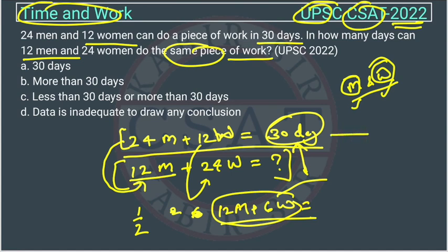So we cannot infer anything from this single equation. We could have inferred information if the ratio of change had been the same. Like it could have been 1/3, or the change with men and women had been in the same proportion. Then we could have made some inference.